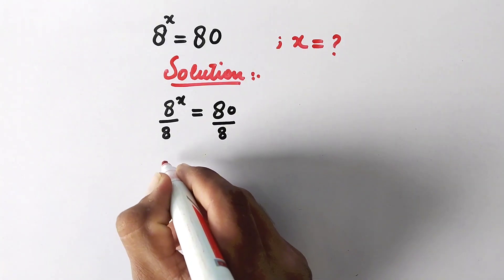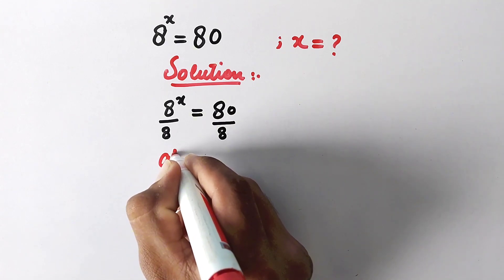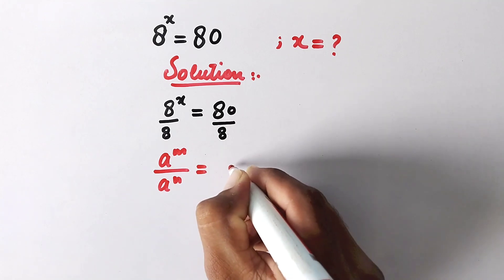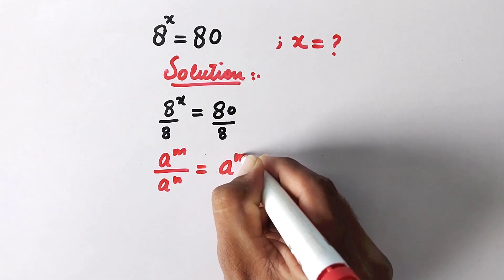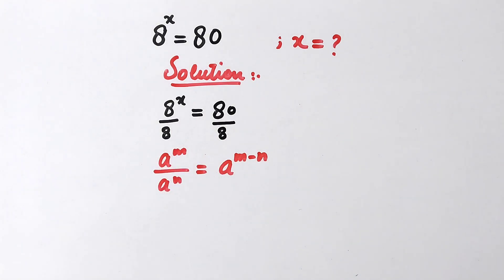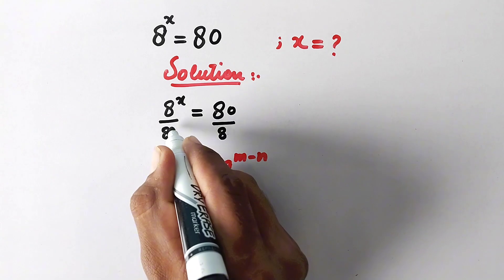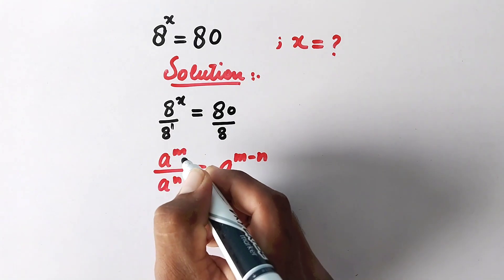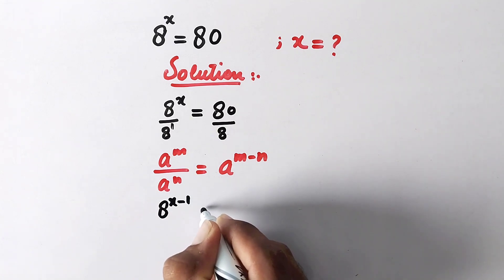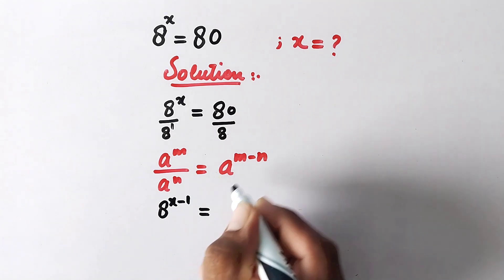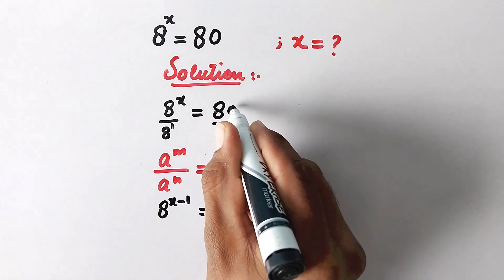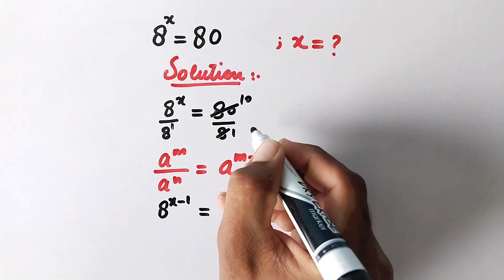As we know that a to power m over a to power n is equal to a to power m minus n. So here we can write this as 8 to power x minus 1 is equal to 10.